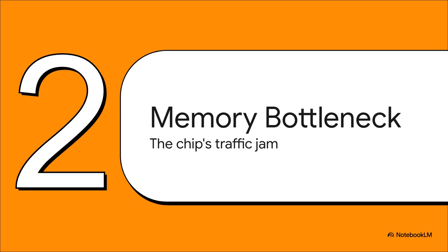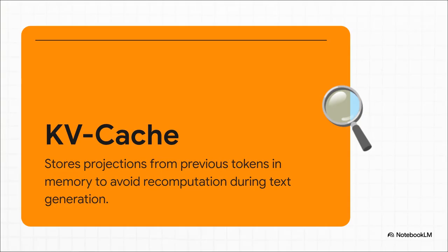The main thing causing all the trouble is a piece of the puzzle called the KV cache. You can think of the KV cache as the AI's short-term memory. As it's writing something, it keeps track of the context, what it's already said in this cache. But here's the problem. This cache gets huge, so big in fact that it can't fit in the super-fast memory that's right next to the processor.